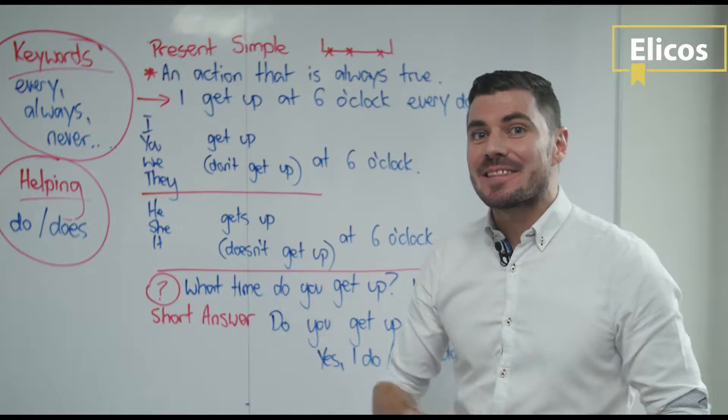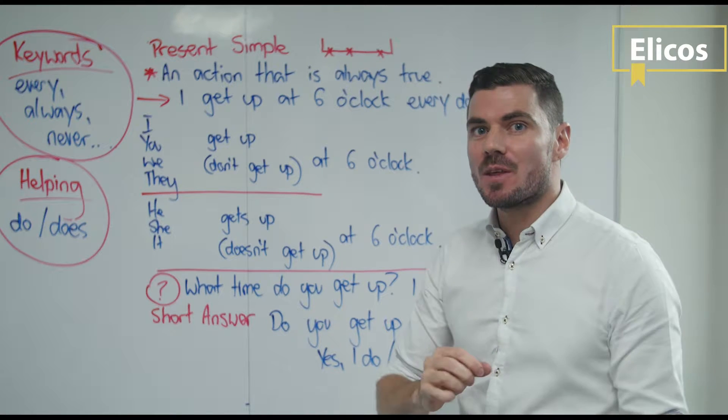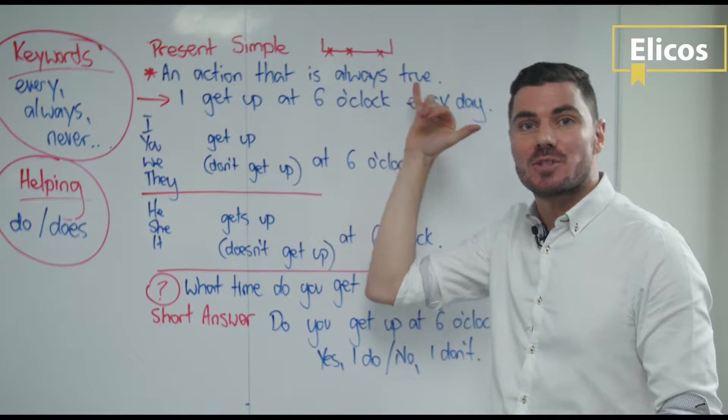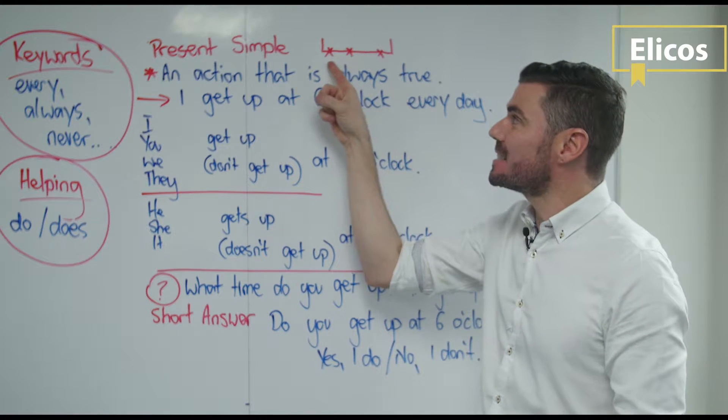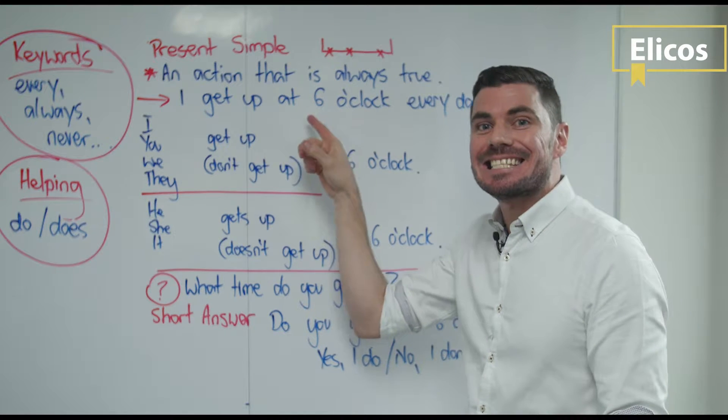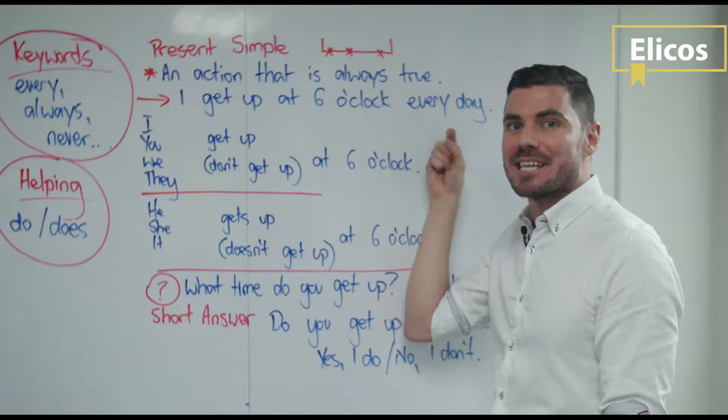So as you can see, the present simple is something we use when we talk about an action that is always true. It happens yesterday, today, and tomorrow. For example, I get up at six o'clock every day.